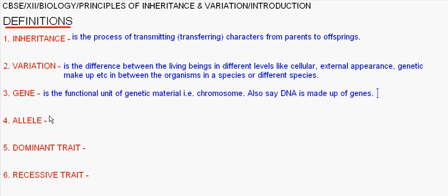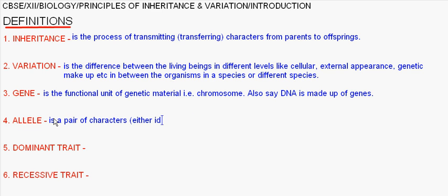One gene is made up of a pair of similar or different characters, each of which is called an allele. An allele is a pair of characters — either identical or different — present in each gene.